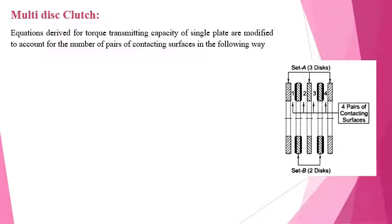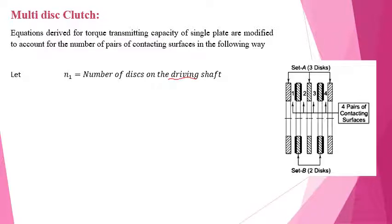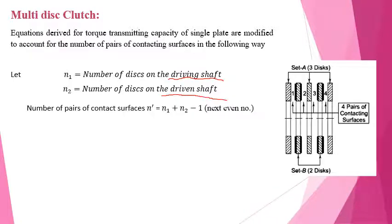The equations derived for the torque transmitting capacity of the single plate clutch are modified to account for this by calculating the number of pairs of contacting surfaces. Let n1 be the number of discs on the driving shaft and n2 the number on the driven shaft. The number of pairs of contact surfaces, denoted n', is given by the total number of discs on both shafts minus one: n' = n1 + n2 − 1.